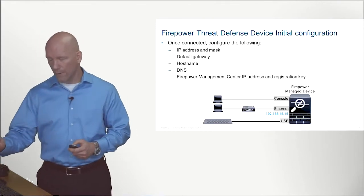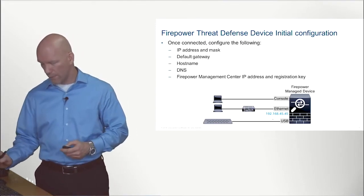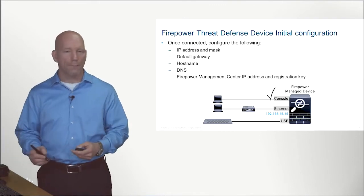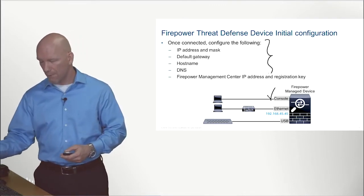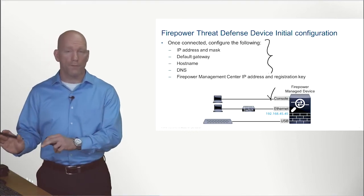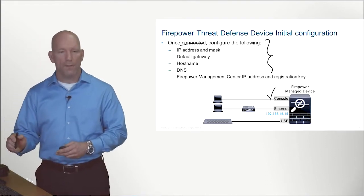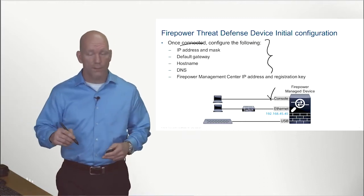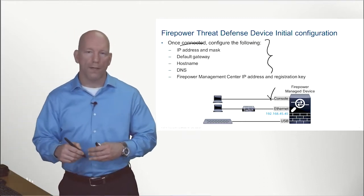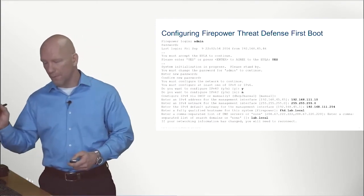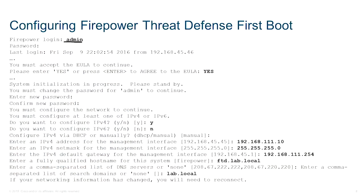For the initial configuration — let's say via console, which is the most common — we need to provide the minimum configuration options. We need IP connectivity so we can do everything else over SSH, via the on-box GUI, or through the Firepower Management Center. We connect in, log in with admin and the default password of capital-A Admin123, and accept the EULA — the End User License Agreement.